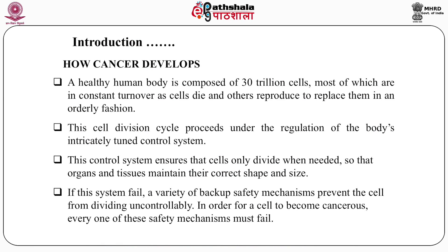How does cancer develop? A healthy human body is composed of 30 trillion cells, most of which are in constant turnover as cells die and others reproduce to replace them in an ordinary fashion. This cell division cycle proceeds under the regulation of the body's instinctively tuned control system, which ensures that cells only divide when needed, so that organs and tissues maintain their correct shape and size.